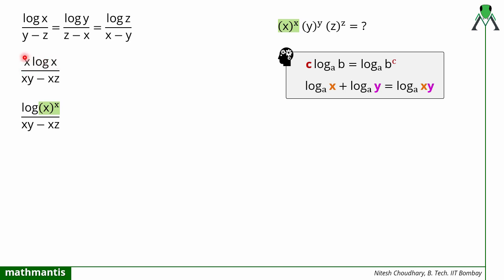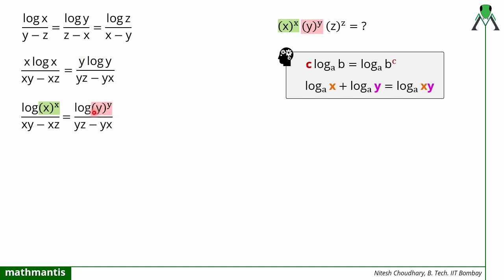Similarly, I will multiply and divide the second term by y, so that y appears multiplied in front, allowing me to generate y raised to power y. That is the second part. Similarly, for the third term, z raised to power z must appear, so I multiply and divide by z. This gives z raised to power z in the log term, and the denominator becomes zx minus zy. So now I have generated z raised to power z.